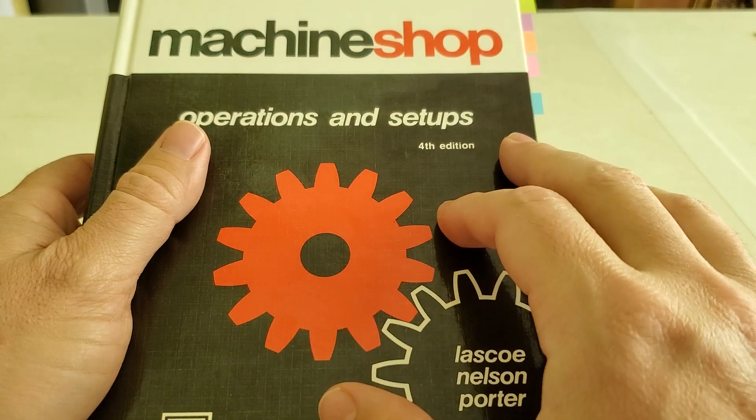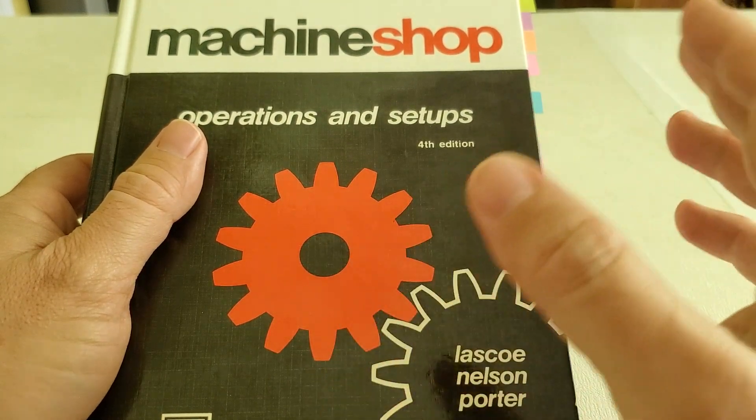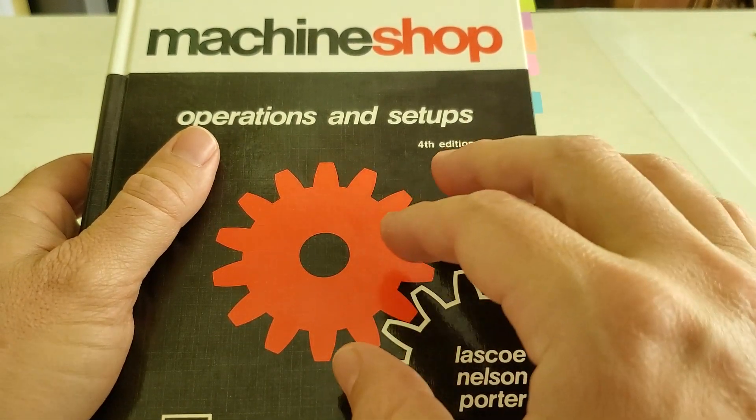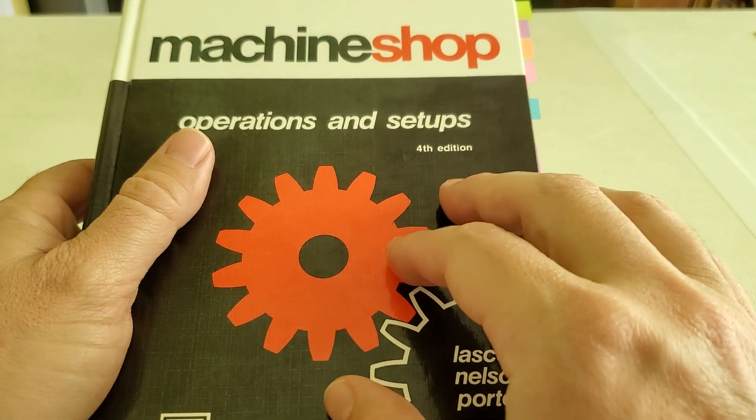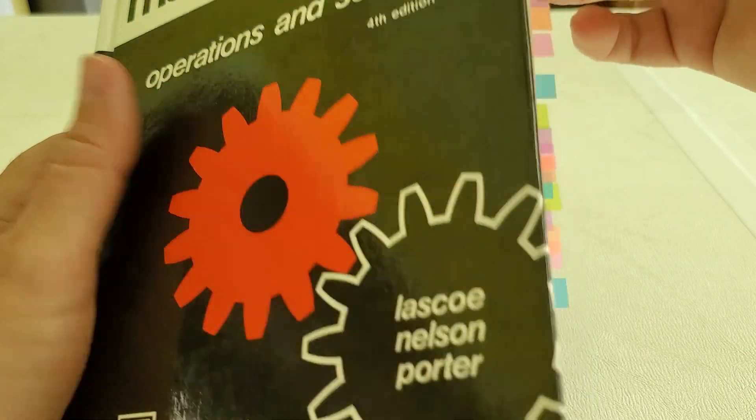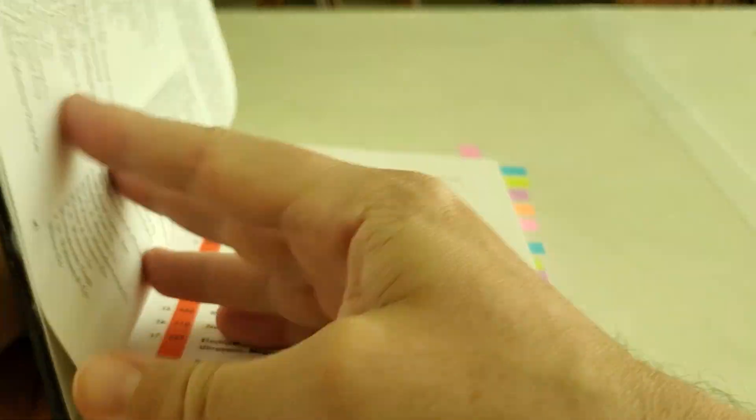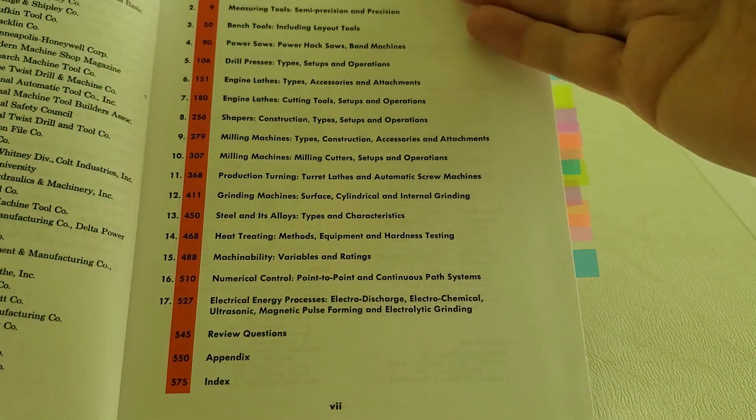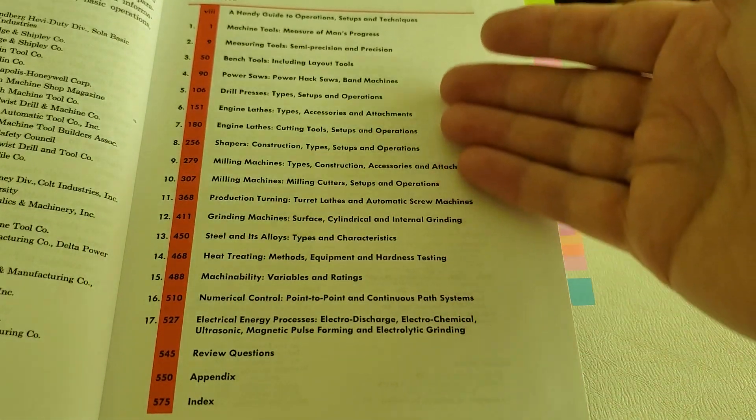So it is a bit on the old side here. But then again, so am I. Since it's a machine shop textbook, it covers pretty much everything from the basics of safety and measuring all the way to pretty much every type of machine that you could possibly imagine.